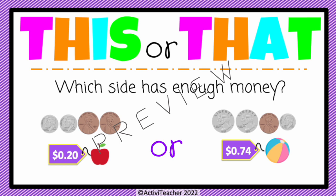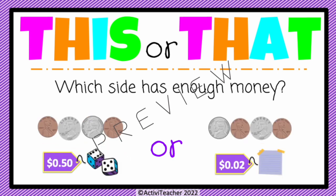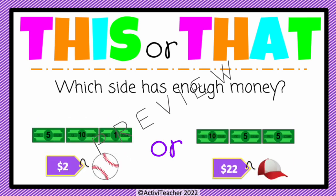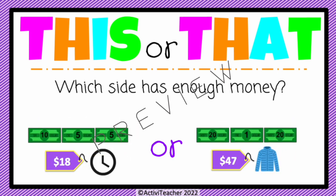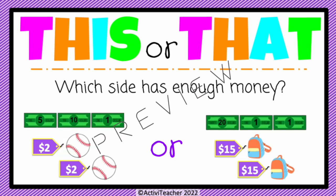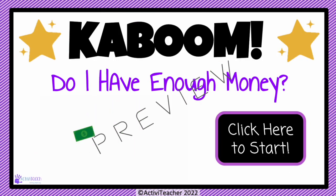Here's our first example: students determine which side has enough money. The first side has 22 cents and the apple costs 20 cents, so that side does have enough money. The second side is 61 cents but the beach ball costs 74 cents, so they do not have enough money. Students go to the correct side of the room. I'll flip through the slides so you can see the different levels.